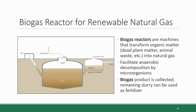The biogas gets siphoned off and used in the same manner as conventional natural gas. The remaining slurry, now called digestate, can be piped out and used as fertilizer. So this is a more renewable, sustainable manner of producing natural gas — though it doesn't mitigate the fact that burning natural gas still generates CO2 emissions, it does mitigate some of the other harmful consequences of drilling for natural gas.